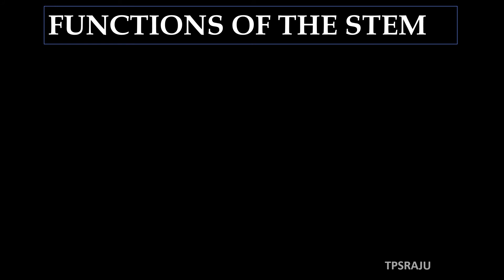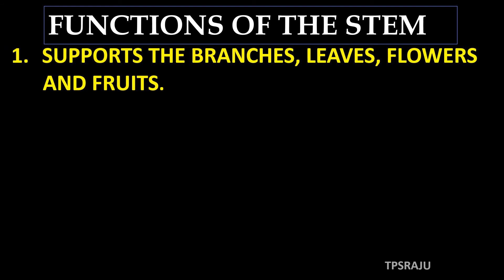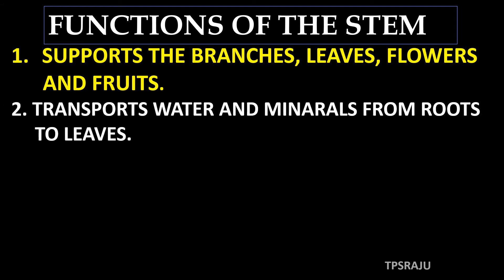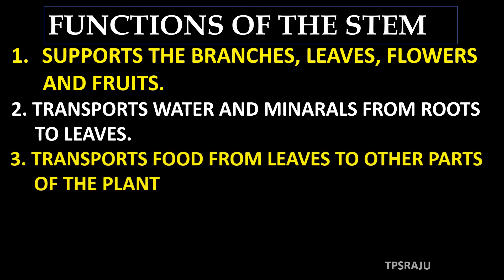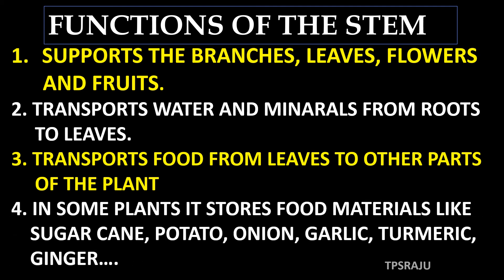Stem functions — it provides 4 main functions. They are: it supports the branches, leaves, flowers and fruits; it transports water and minerals from roots to leaves; it transports food from leaves to other parts of the plant; and in some plants, it stores food materials, like sugarcane, potato, onion, garlic, turmeric, ginger, etc.